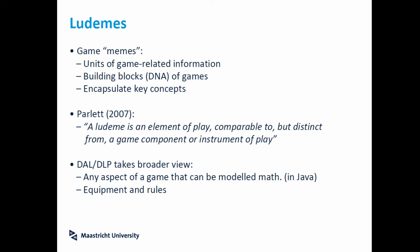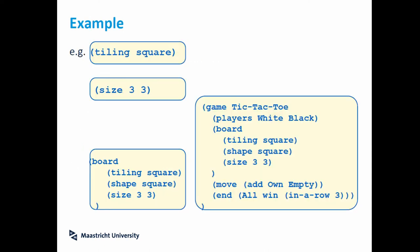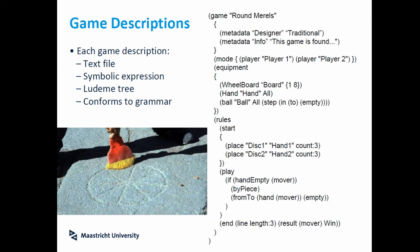For the project, we use Java — a powerful language — and we can model any equipment or boards. To give an example: 'tiling square' defines a board tiled by squares; 'size 3-3' defines a board of size 3×3. So this is a square board tiled by squares of size 3×3. That kind of board can be used to define a game. Here is an example directly in game description: Tic-tac-toe. Everyone knows Tic-tac-toe. You have two players — white and black — the board defined before, and the only move is to place a piece on any empty space. You win the game if you make a line of three. This is how we can define games with ludemes, and our game description can be just a text file using symbolic expressions, allowing us to define a ludeme suite to define the rules of a game.